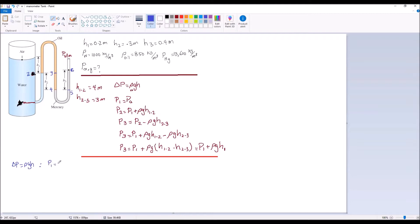P2 is P1 moving down from 1 to 2 plus rho. What is the liquid? It is water. Rho water G times H from 1 to 2 is called H1 here.